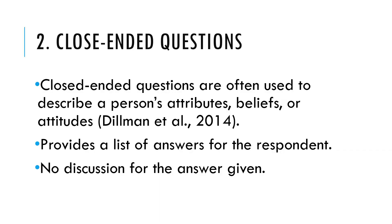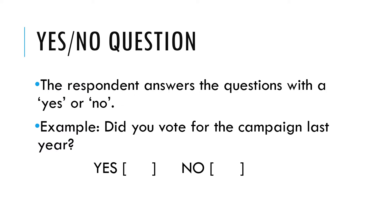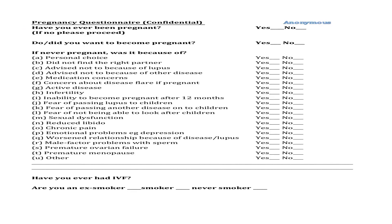Next is close-ended questions. Close-ended questions are often used to describe a person's attributes and attitudes. They provide a list of answers for the respondents and there is no open discussion for the answer given, unlike open-ended questions. There are five types of close-ended questions: yes or no questions, multiple choice, scale questions, rank ordering questions, and false choice questions. The first one, yes or no questions, requires respondents to answer with a yes or no. For example: 'Did you vote for the campaign last year? Yes or no?'